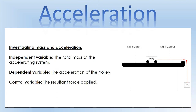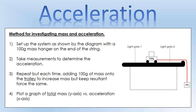In the second experiment we're investigating mass and acceleration. The thing we're going to change is the total mass of the accelerating system, and we'll observe its effect on the acceleration of the trolley. The thing we need to keep the same this time is the resultant force, so we keep the mass on the hanger exactly the same — something like 100 grams. We measure the acceleration, then repeat adding 100 grams to the trolley each time, and plot a graph of mass versus acceleration.